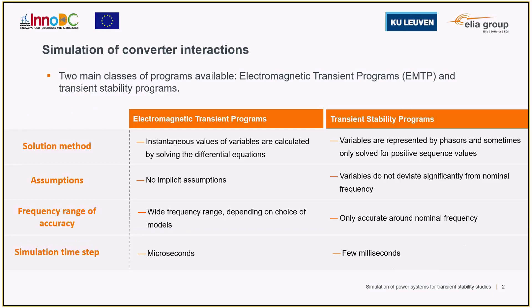There are two main classes of programs available for the simulation of converter interactions: electromagnetic transient programs, also known as EMTP, and transient stability programs.